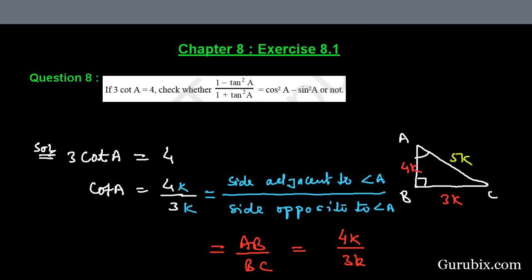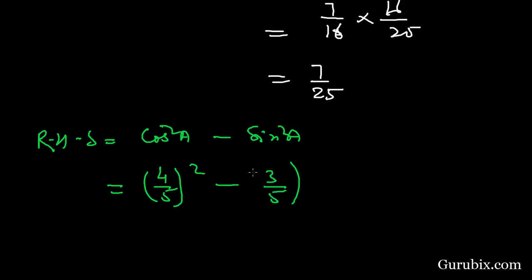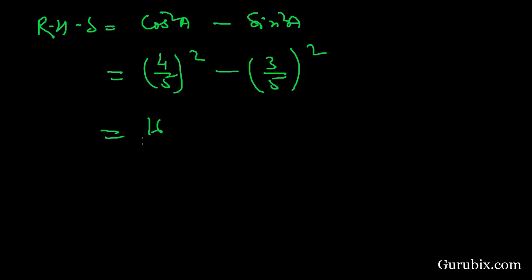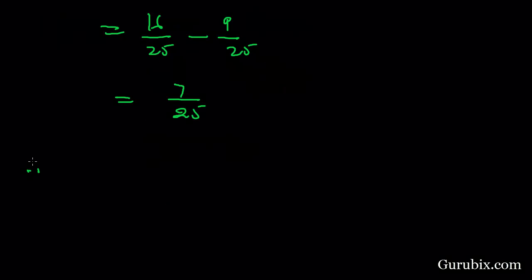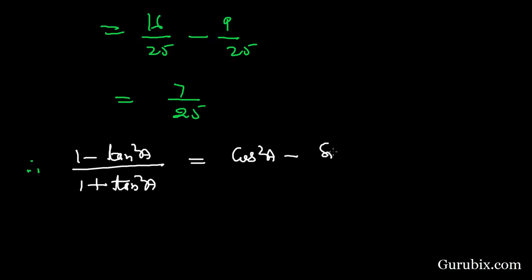Now we shall evaluate the right-hand side: cos² A - sin² A. Substituting, this is (4/5)² - (3/5)² = 16/25 - 9/25 = 7/25. Since LHS = RHS = 7/25, the identity is verified. This is the solution of the question.